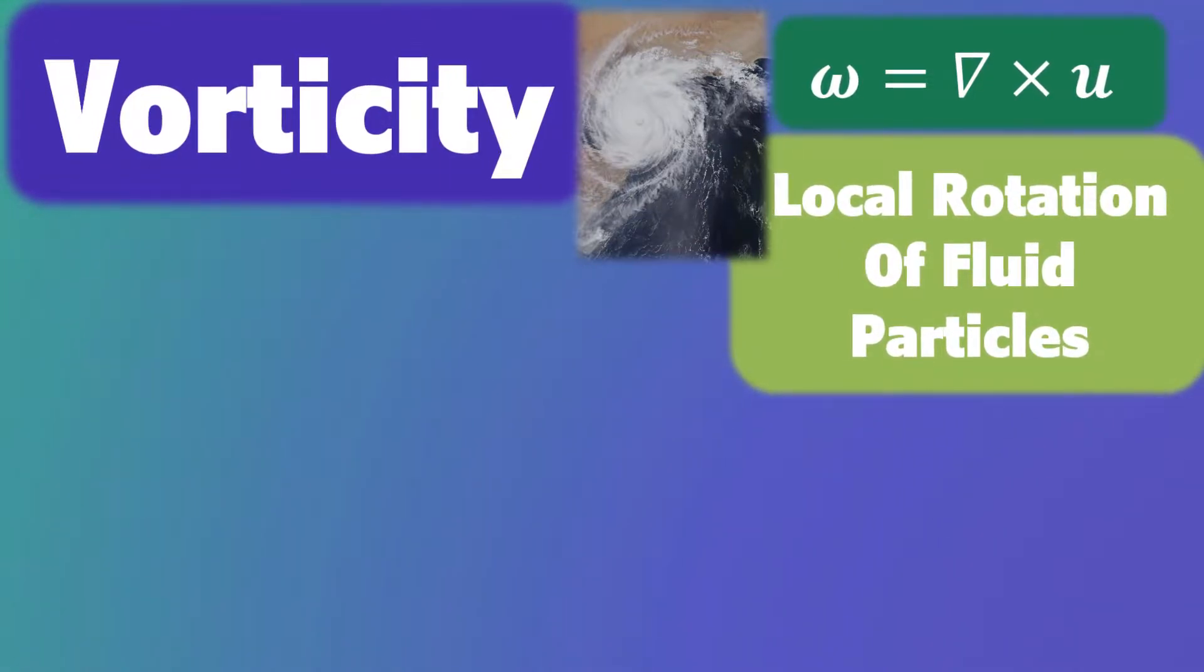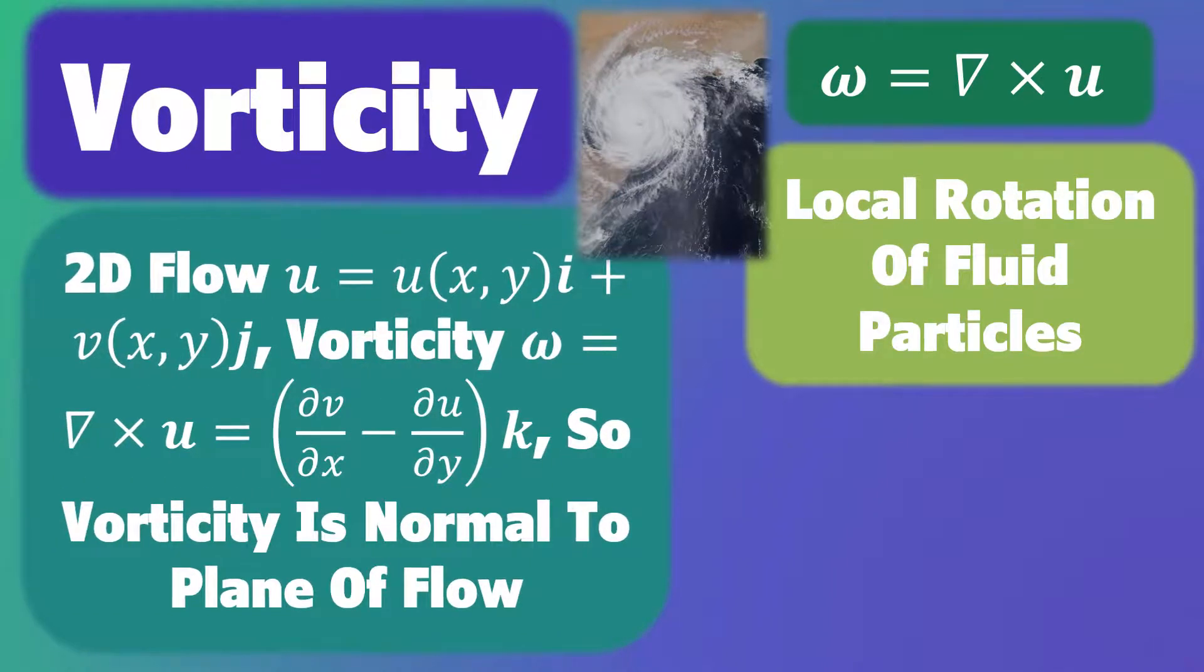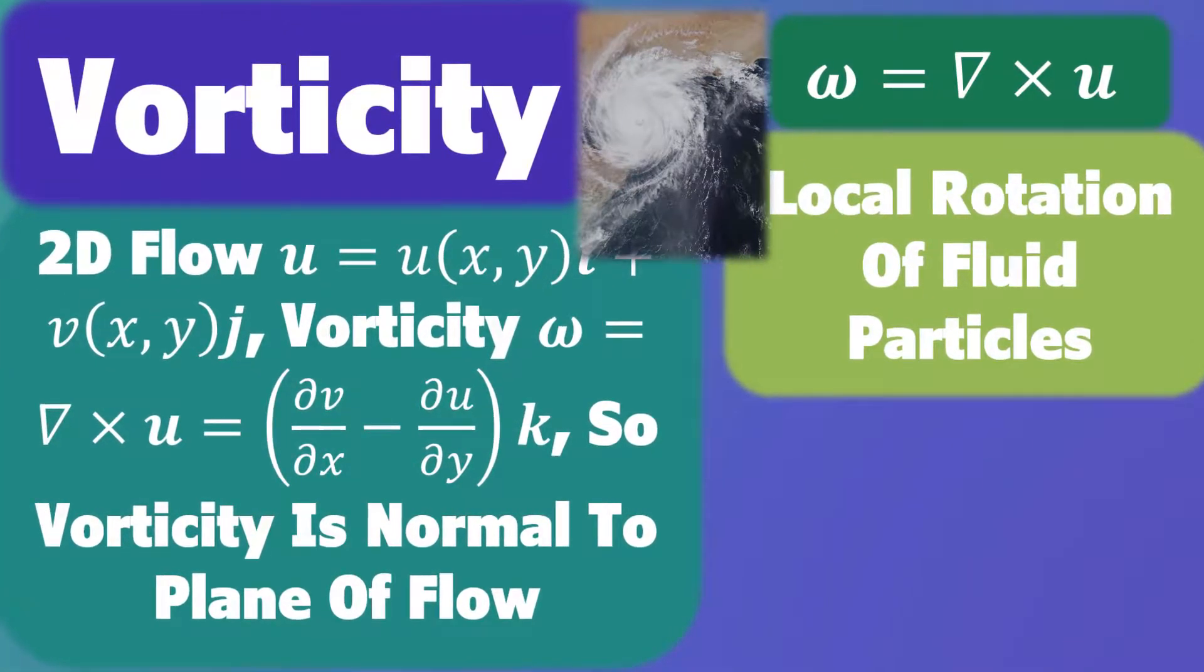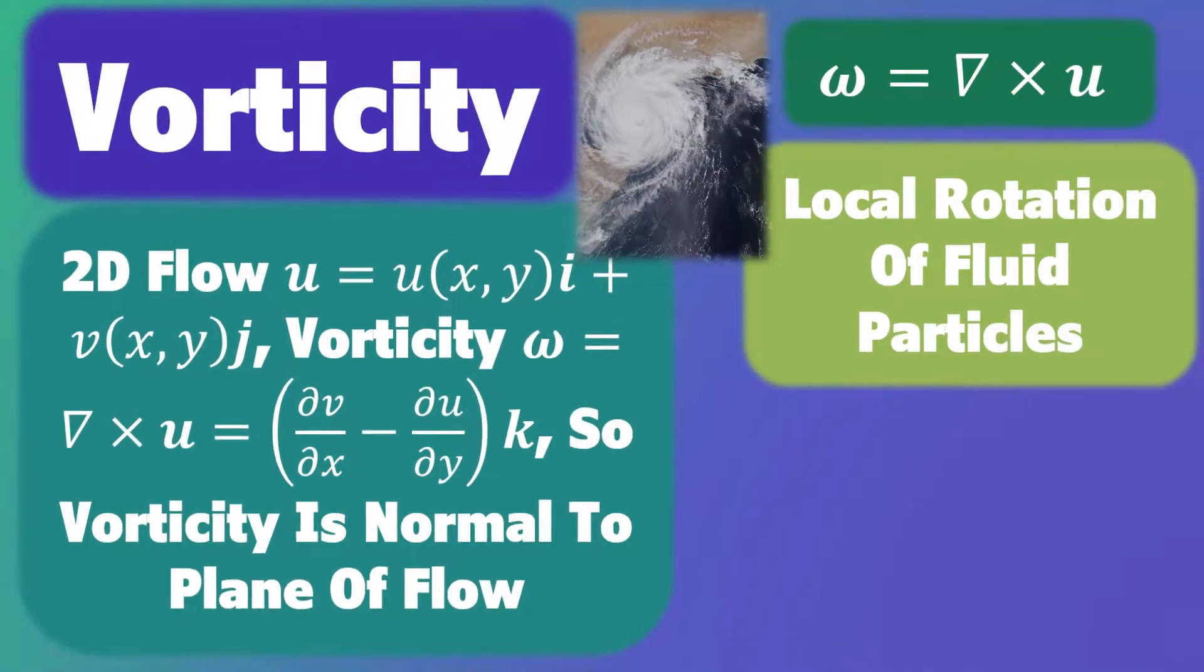where omega is the vorticity and U is the velocity of the flow. For a two-dimensional flow, we have that the vorticity is equal to this expression here, so the vorticity is normal to the plane of the flow.